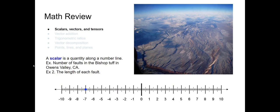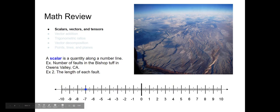A scalar is a quantity along a number line. If you could plot that number on a one-dimensional number line, then it's a scalar. So negative seven is a scalar, the number one or 1.5 — those are scalars. For example, the Bishop Tuff is a volcanic unit in Owens Valley, California.